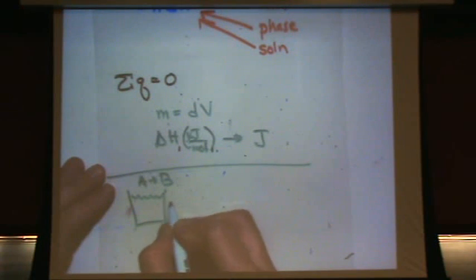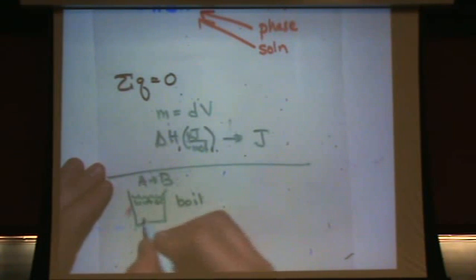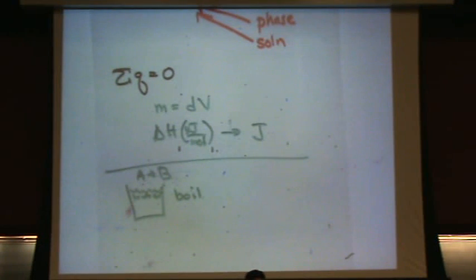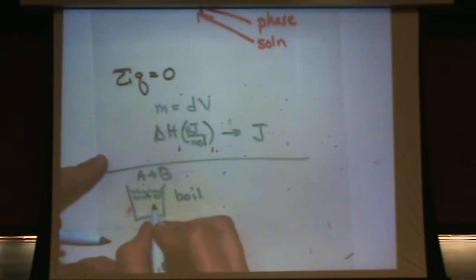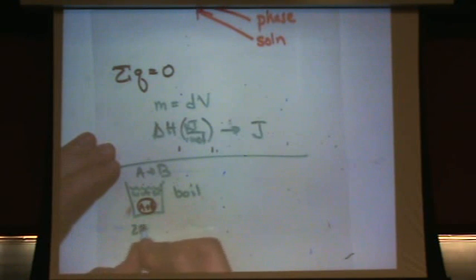That reaction that happens in here causes this stuff to boil. So this is liquid, this is water. The reaction A goes to B happens inside the water. It causes complete boiling. There's this little part in here, A goes to B. This starts off at 25 degrees C.